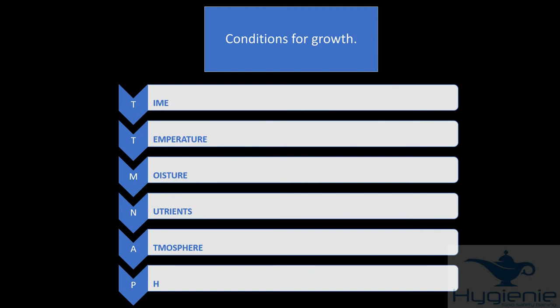What are the conditions for bacterial growth? Think TT, MNN and AP. T stands for time, T stands for temperature, moisture, nutrients, atmosphere and pH.